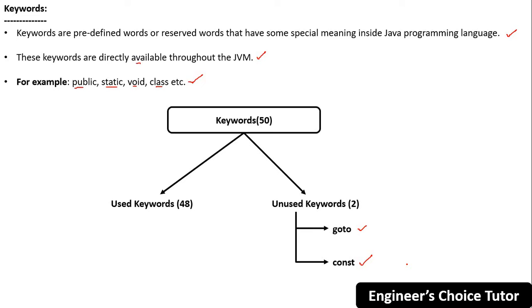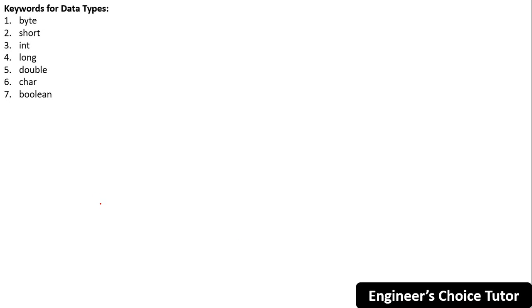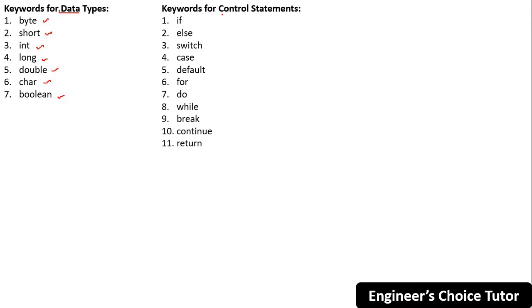We have a few keywords for data types: byte, short, int, long, double, char, and boolean. These are the seven data type keywords. When we learn the data types concept, we will cover each of these seven keywords in detail.